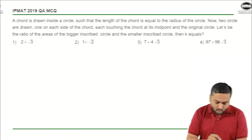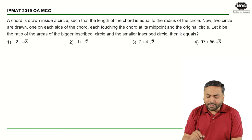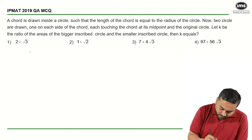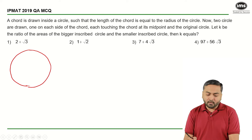A chord is drawn inside a circle such that the length of chord is equal to the radius of the circle. So, a chord is drawn inside a circle, here is a circle that I have such that the length of chord is equal to the radius of a circle.